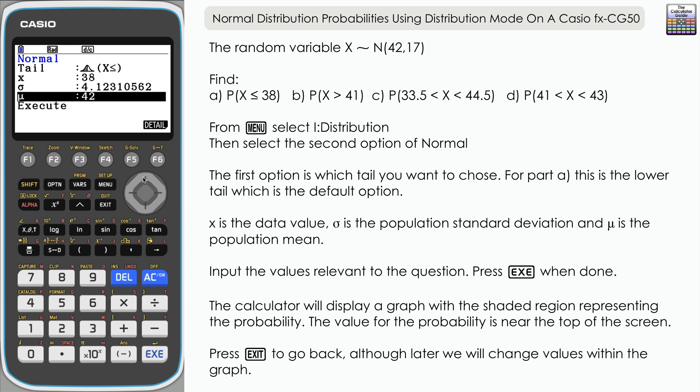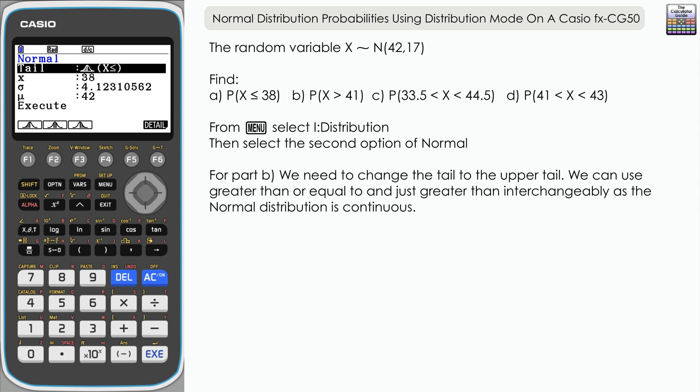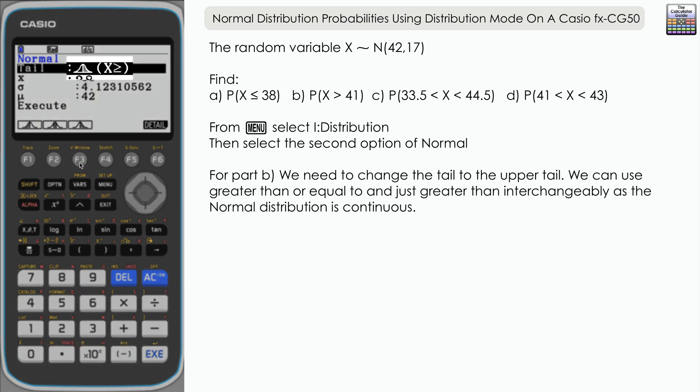Part B: we're looking for the probability that X is greater than 41. That is upper tail, so if you navigate back to tail and press F3, you might notice that we've got X is greater than or equal to.